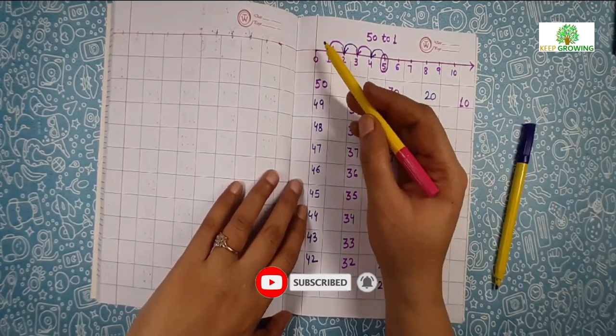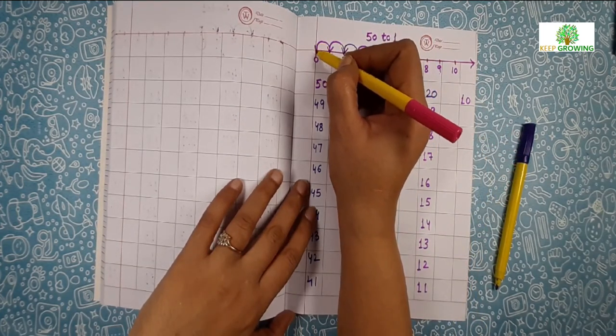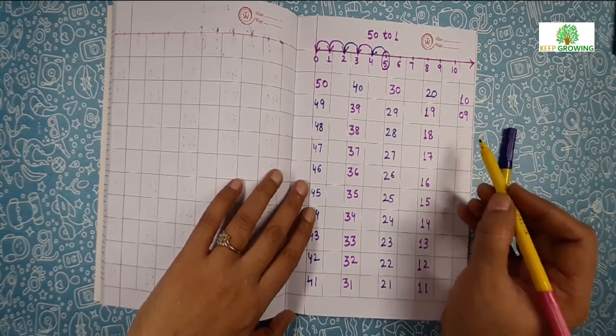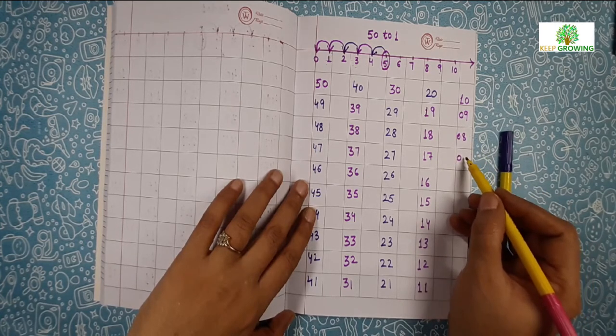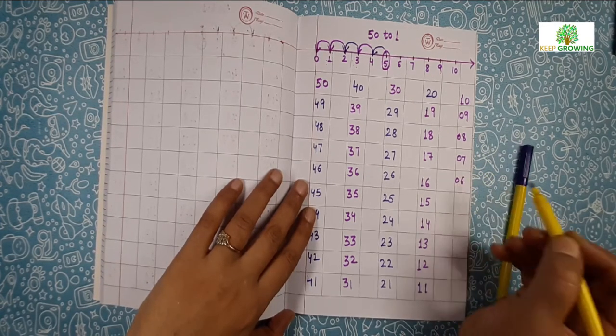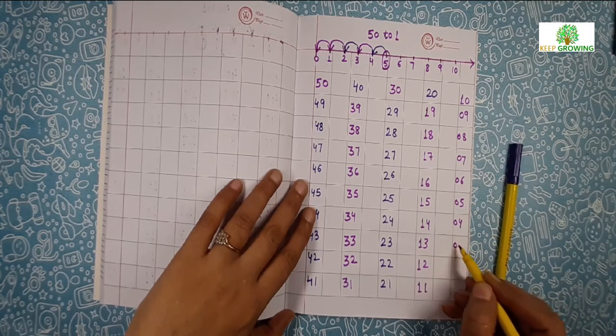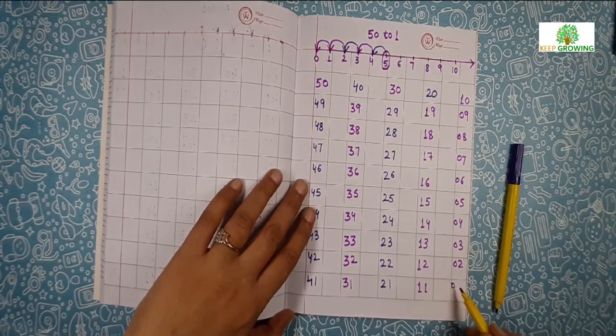0 comes before number 1. Make a jump on 0. 0, 9, 9. 0, 8, 8. 0, 7, 7. 0, 6, 6. 0, 5, 5. 0, 4, 4. 0, 3, 3. 0, 2, 2. 0, 1, 1.